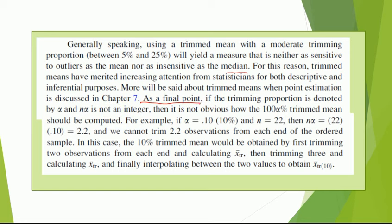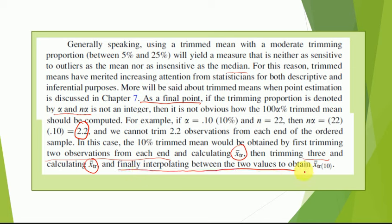If the trimming proportion is denoted by alpha and n times alpha is not an integer — for example, if alpha is 0.1 and n is 22, then n times alpha is 2.2, and we cannot trim 2.2 observations from each end. In this case, the 10 percent trimmed mean is obtained by first trimming two observations from each end and calculating that trimmed mean, then trimming three observations from each end and calculating that trimmed mean, and finally interpolating between the two values to obtain the final 10 percent trimmed mean.